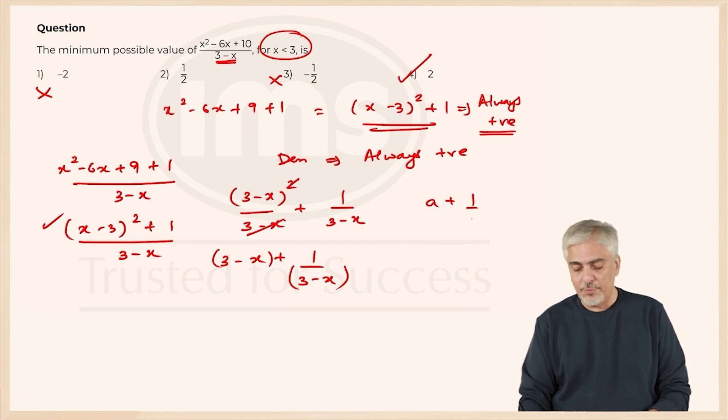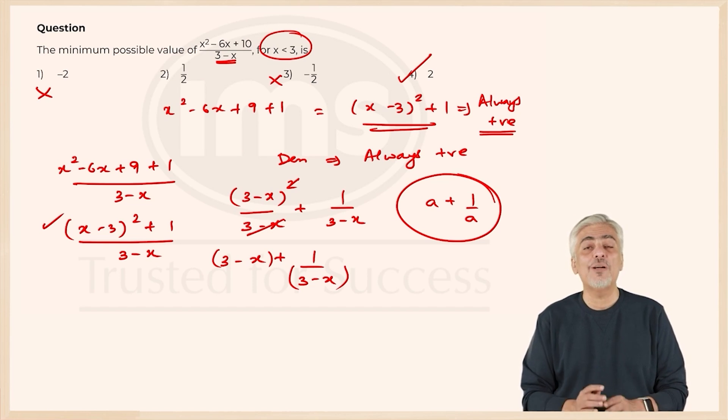So we have got a plus 1 upon a and they are asking for minimum value of a plus 1 upon a, I am sure you have come across this 1000 times. Minimum value of a plus 1 upon a will always be 2 because minimum value you can have is only 2, there is no other way possible for a value less than 2, answer will be the fourth option.